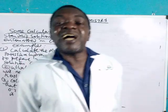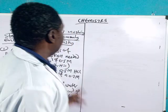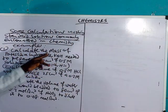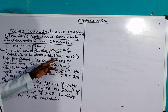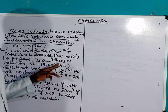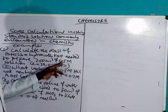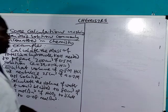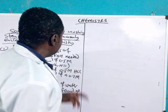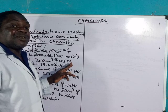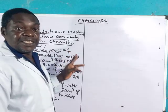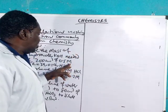That being said, let's go into the calculations proper. The first one: calculate the mass of potassium hydroxide (KOH) needed to prepare 200 cm³ of 0.5 molar solution.